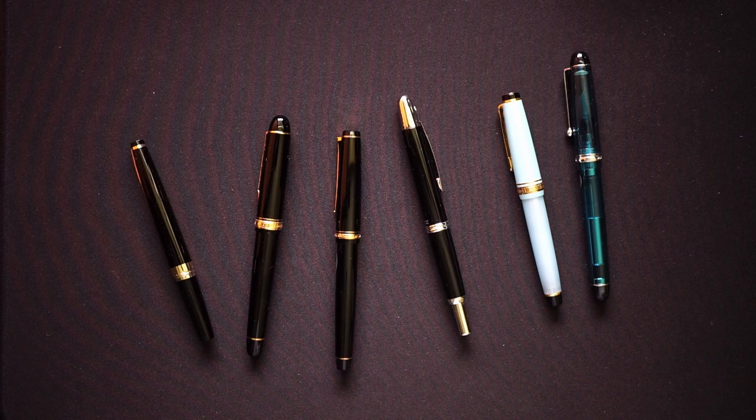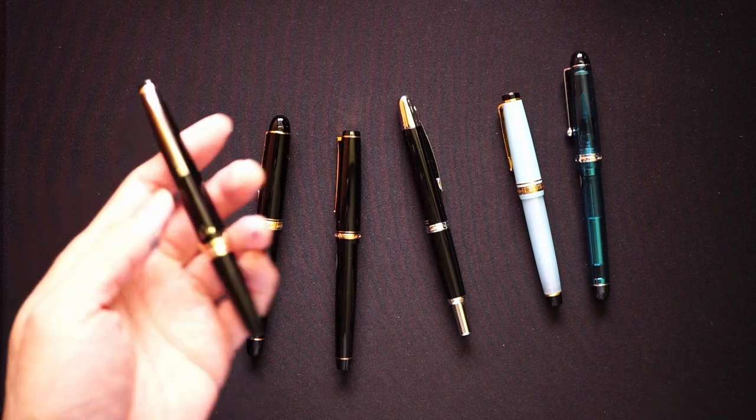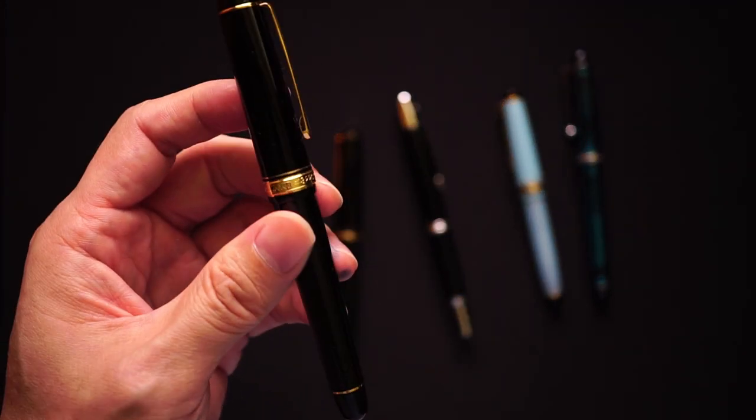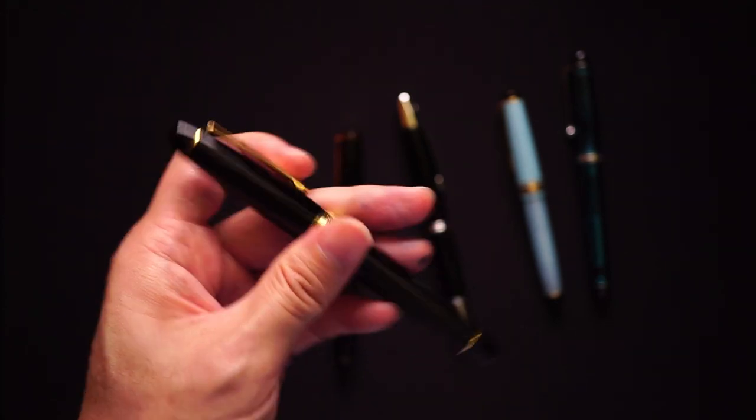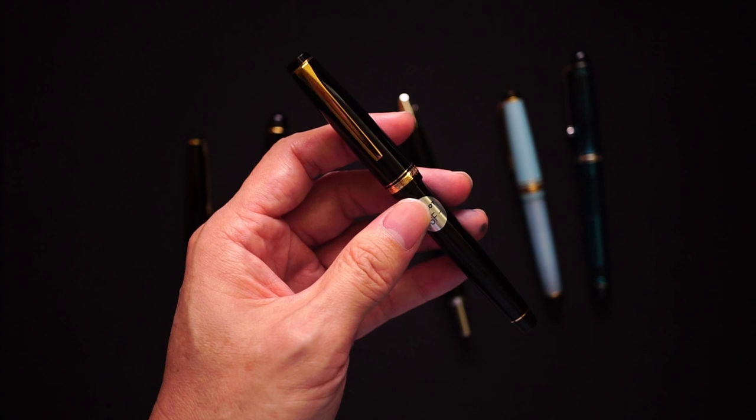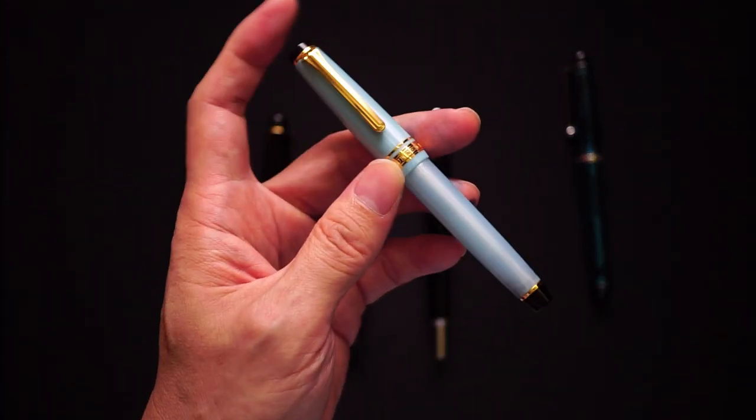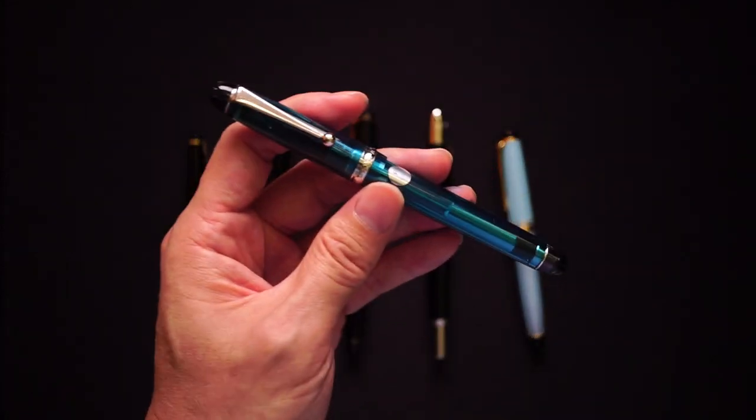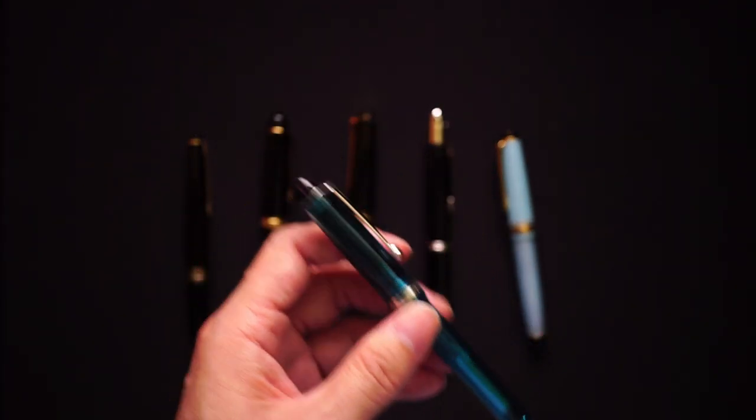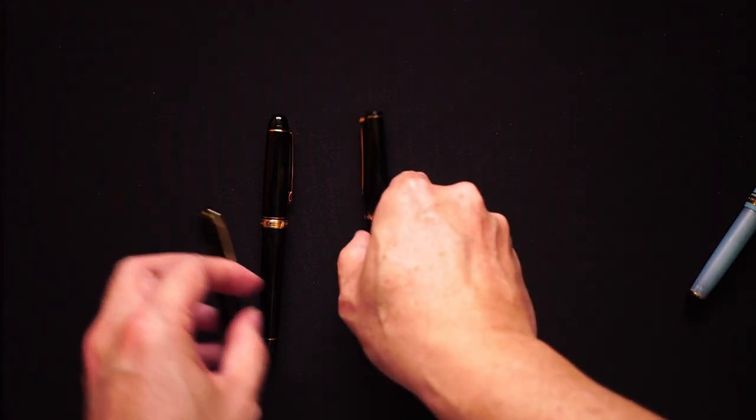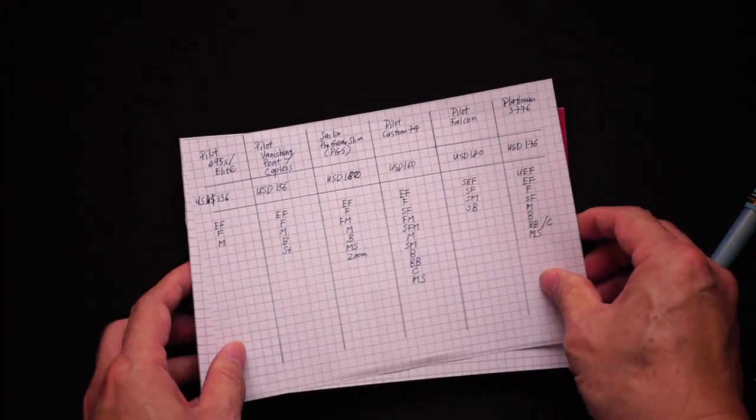The budget or beginner gold nibbed pens from the left: the Pilot E95S or Elite, the Platinum 3776, the Pilot Falcon, the Pilot Vanishing Point, the Sailor Pro Gear Slim, and finally the Pilot Custom 74. I'm going to go through each of these pens and come up with some conclusions, maybe even end the video with my pick in terms of which pen I would choose.